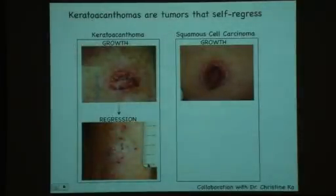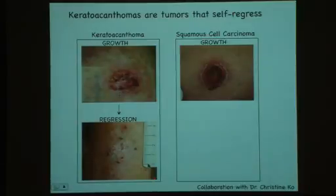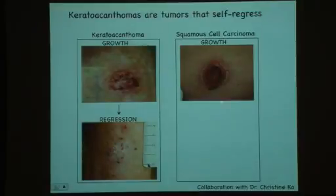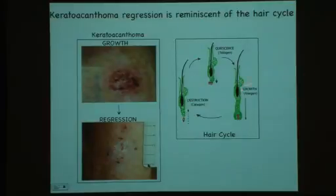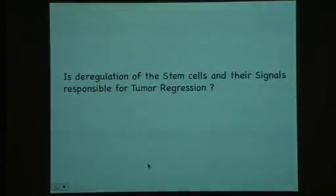I want to draw your attention to a very neat tumor model we are interested in, based on a collaboration with Dr. Christine Koh from Dermatology. These tumors — called keratoacanthoma — belong to the family of squamous cell carcinoma. However, differently from squamous cell carcinoma, which only grows, keratoacanthoma can both grow and self-regress, which is a unique facet of these tumors. This made us hypothesize that the regression of keratoacanthoma from growth to complete remission may be fueled the same way that the hair cycle self-regresses, and that deregulation of stem cells and their signals might be responsible for tumor regression.